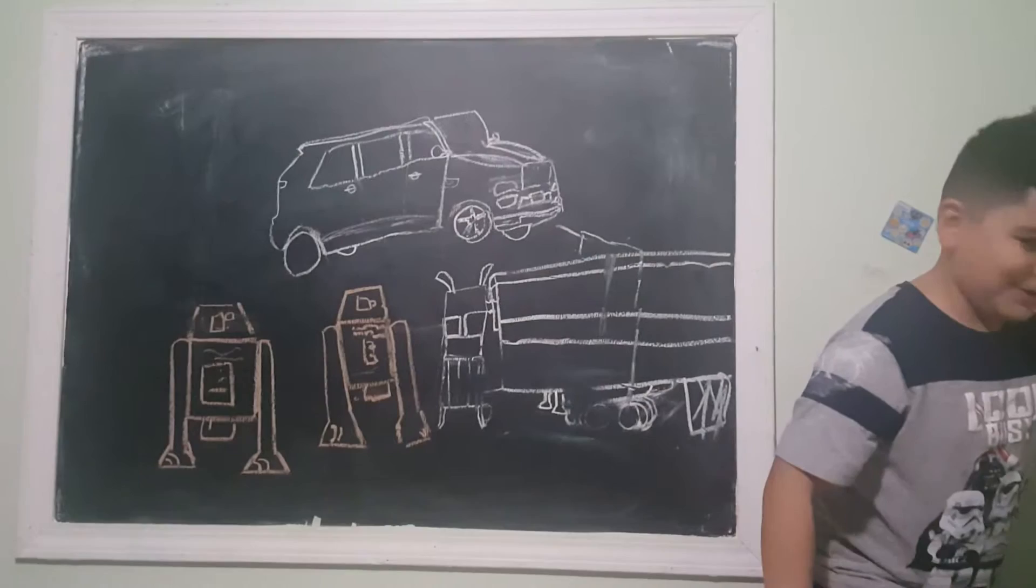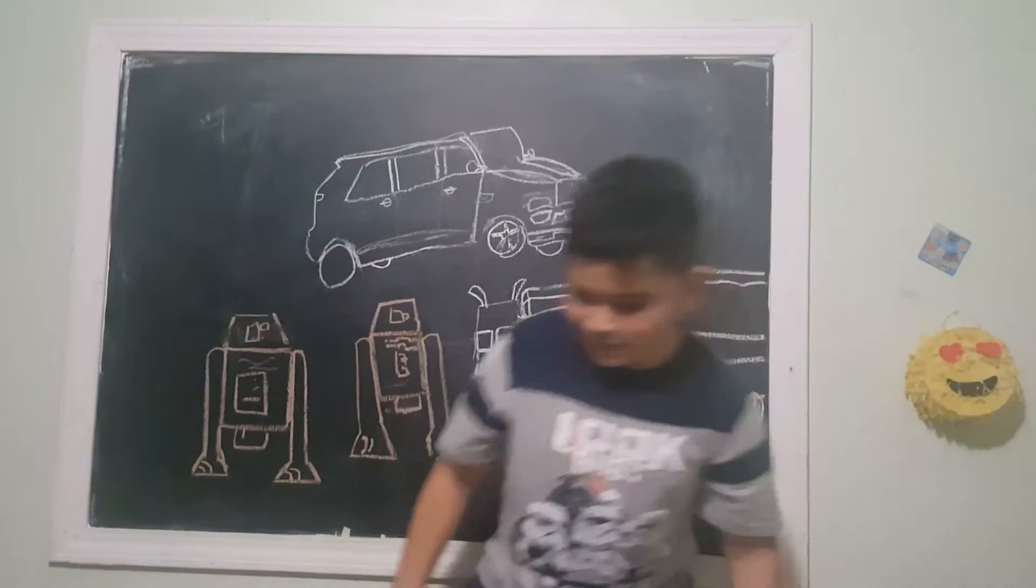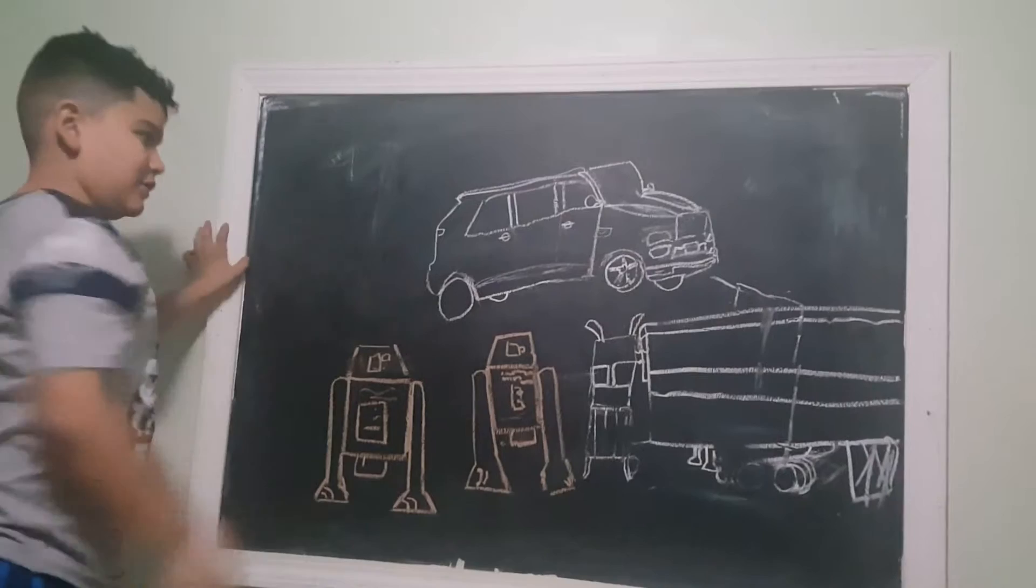Today we're going to draw Dark Reader from Star Wars. The first part that we're going to do is the head, the thing that he breathes from.